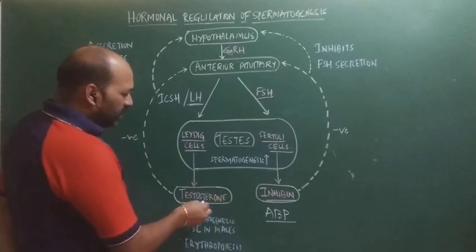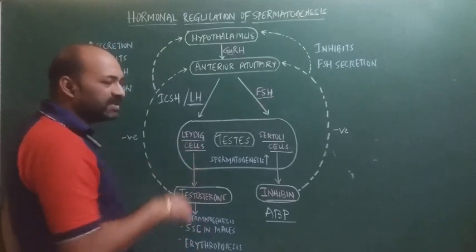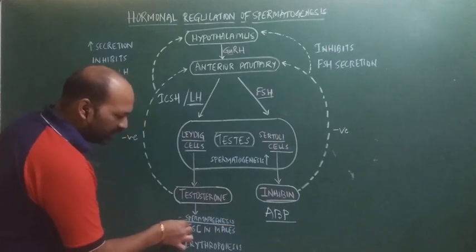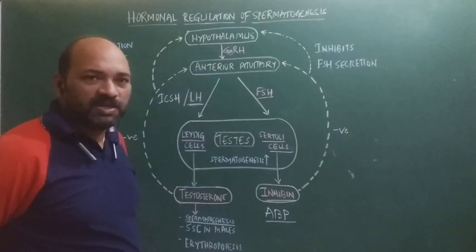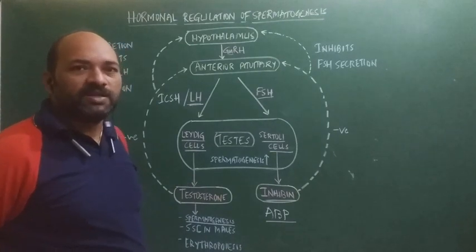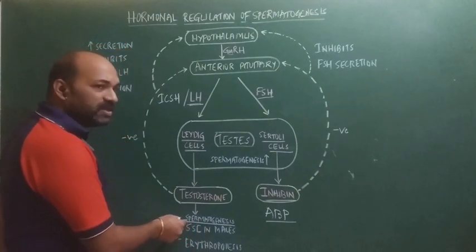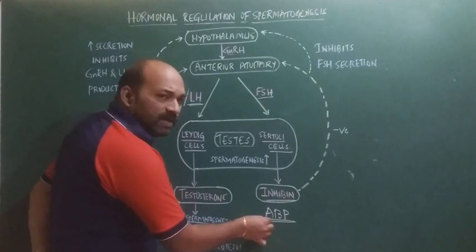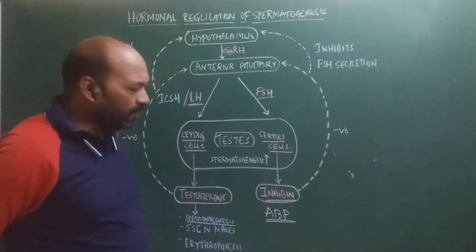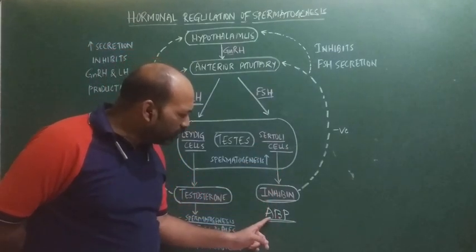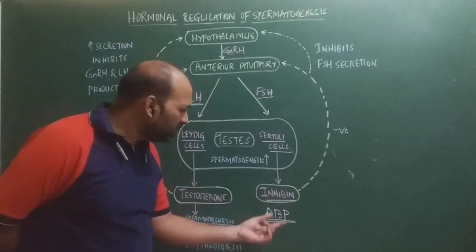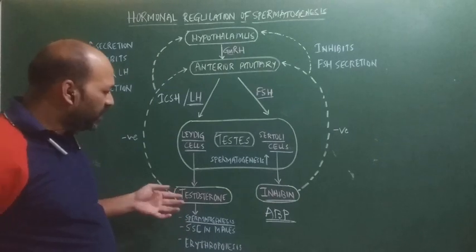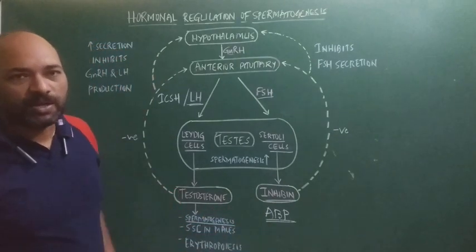The testosterone secreted by the Leydig cells is mainly involved in stimulating the first step of spermatogenesis — that is, it stimulates the production of sperm. This production of sperm is entirely facilitated by the androgen binding protein secreted from the Sertoli cells. As the name suggests, androgen binding protein binds to the androgen — that is testosterone — and stimulates the process of spermatogenesis.